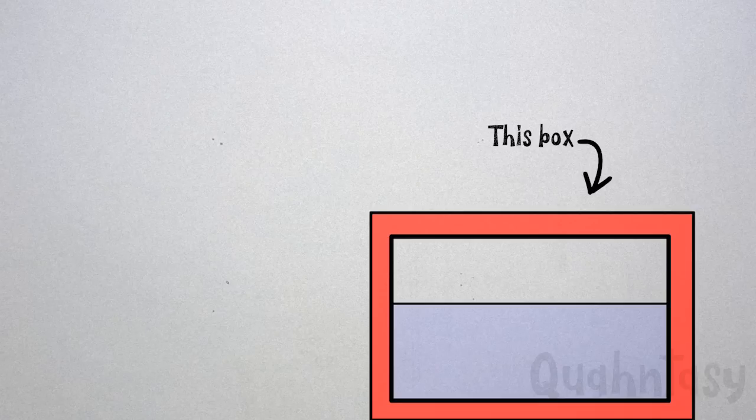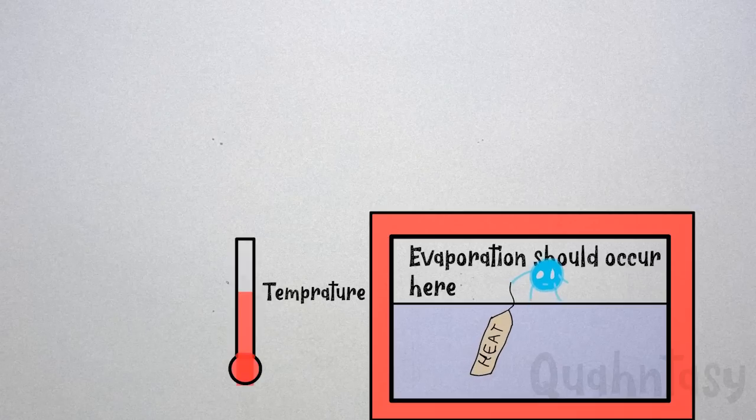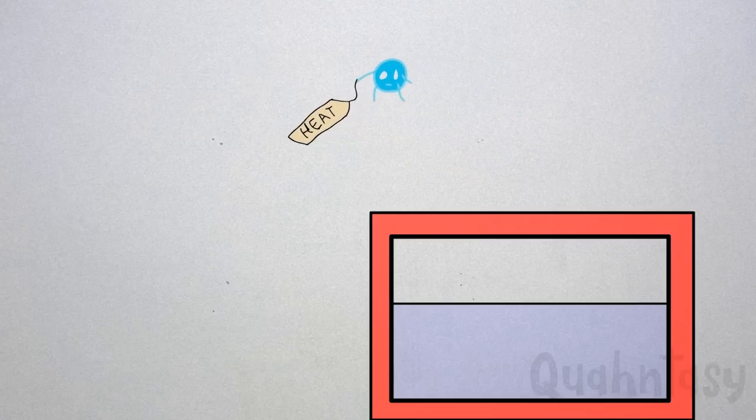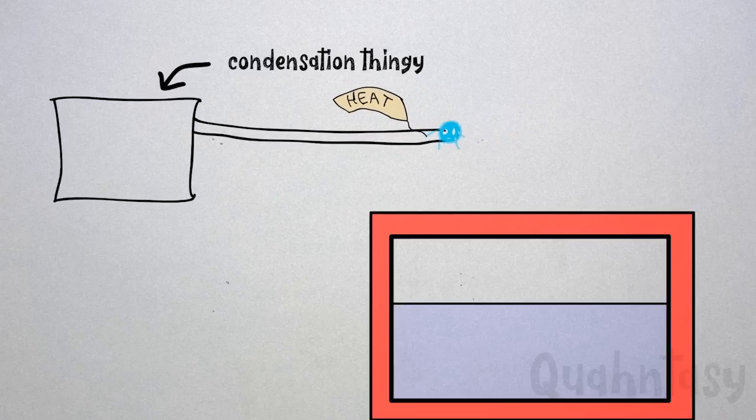Let's say we want to cool this box. We would want evaporation to take place inside this box so that it takes away its heat and the box cools down. But then we would want to release this heat somewhere. That's where the condensation comes in. We can do the condensation outside this box, which would release all the heat in the surroundings.